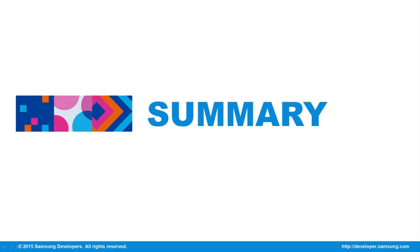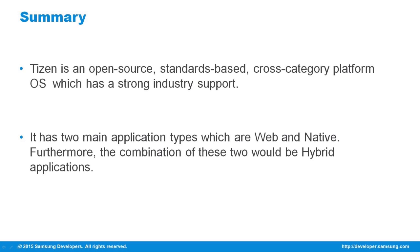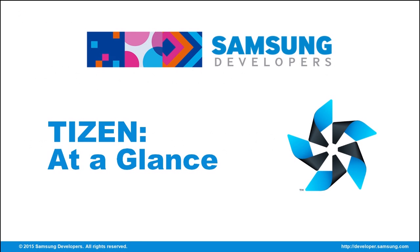Here's a brief summary of today's session. First, Tizen is an open source cross-category platform OS with strong industry support. Second, it has two main application types — native and web. When these two are combined, it creates a hybrid application. That's about it for Tizen: its architecture, types, and profiles.